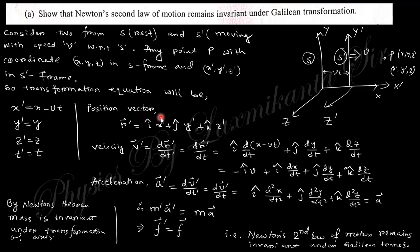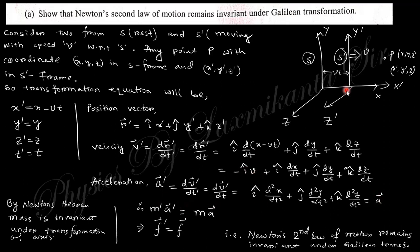The position vector in the prime frame follows from these equations. Taking the time derivative gives the velocity, and since x' = x − vt, the velocity differs by −v (i-hat). Taking the derivative again, the acceleration is the same in both systems, because the −v term vanishes on differentiation. So the force is also equal in both frames, since in Galilean transformation the mass is invariant.